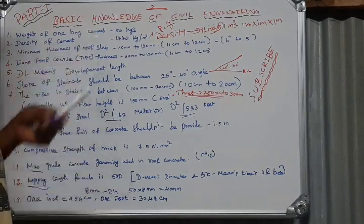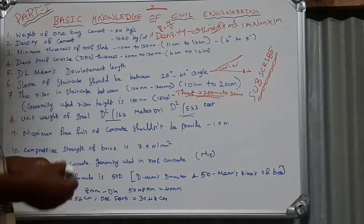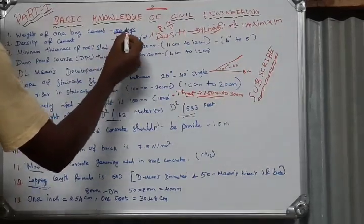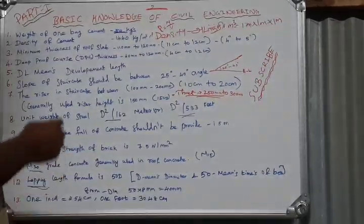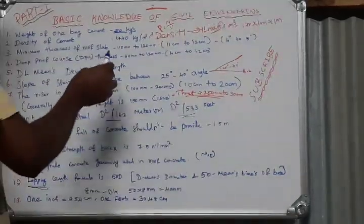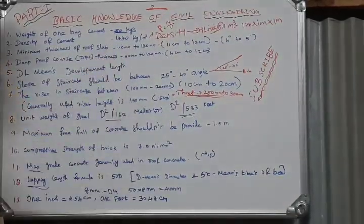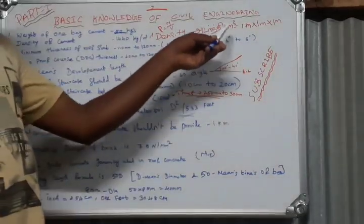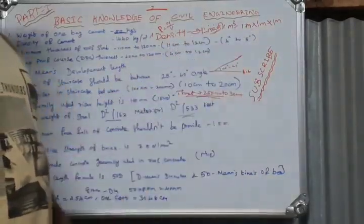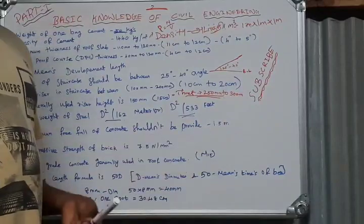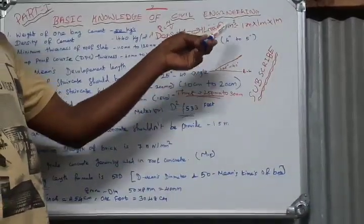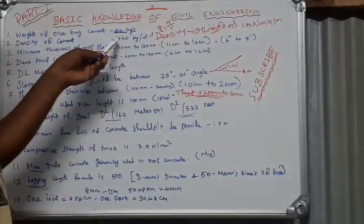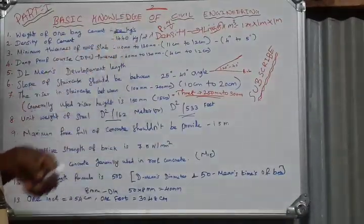First, the weight of cement is 50 kgs per bag. Second, the density of cement is 1440 kgs per cubic meter. For 1 meter cube, the density of cement is 1440 kgs.